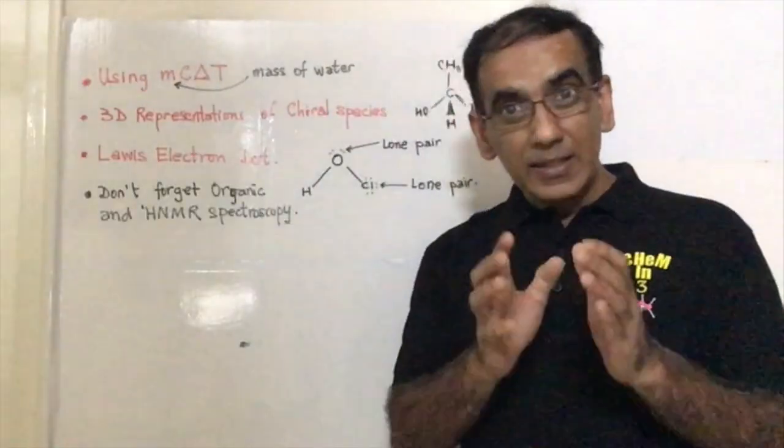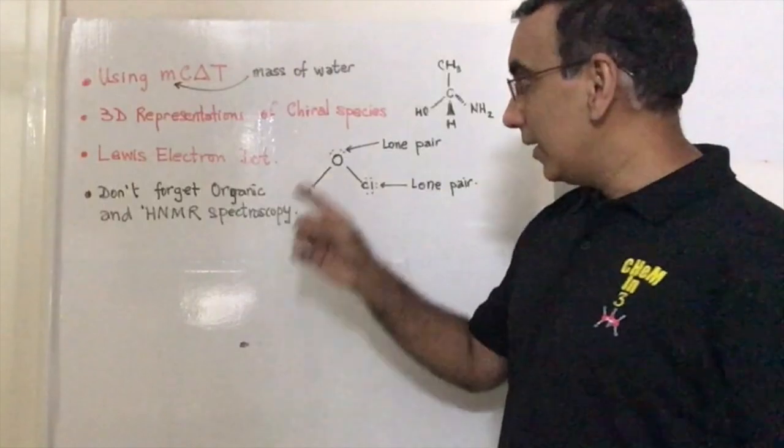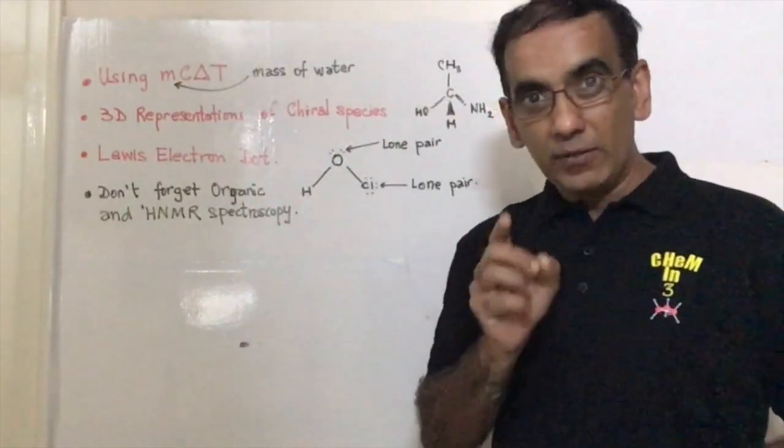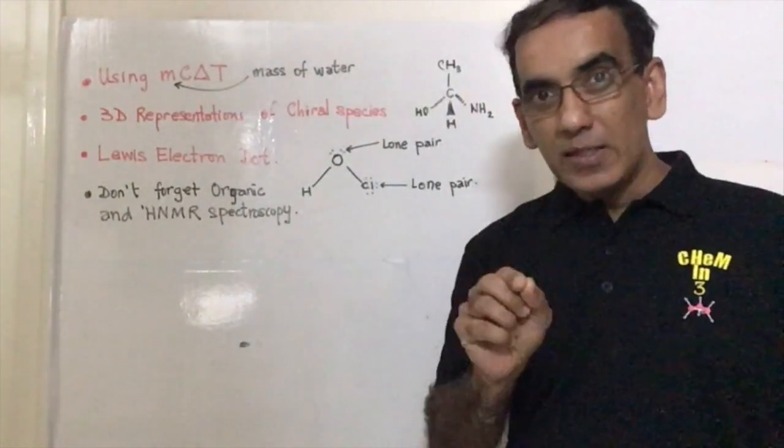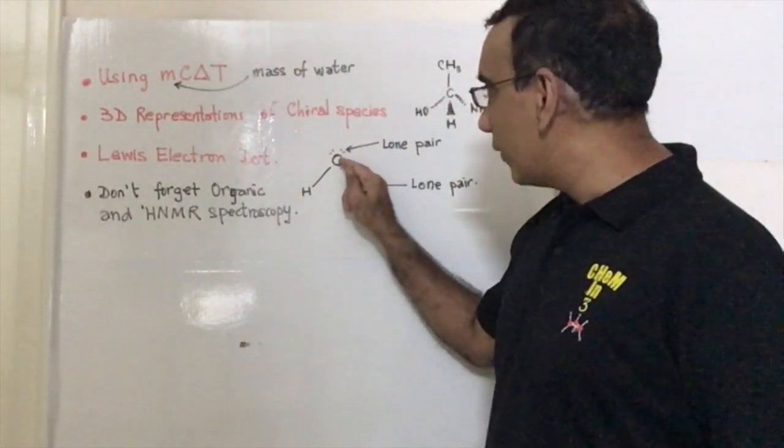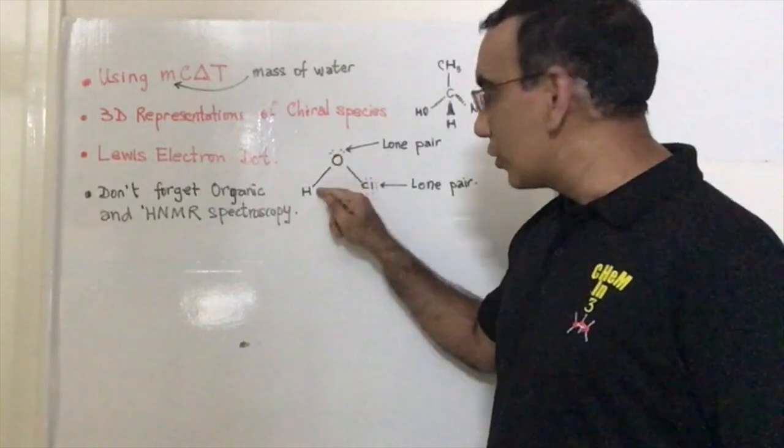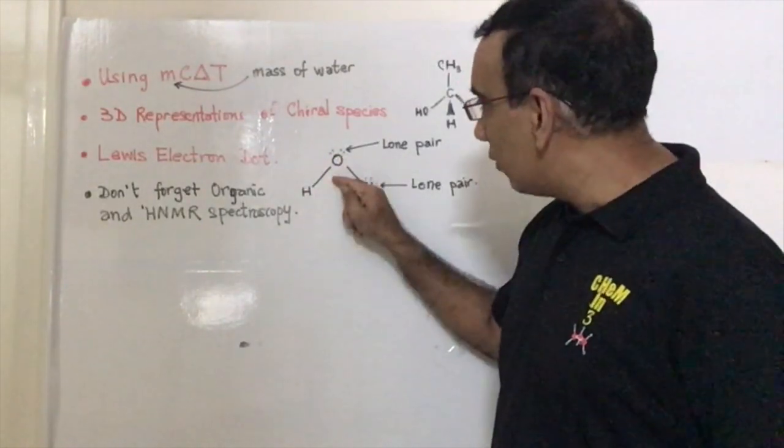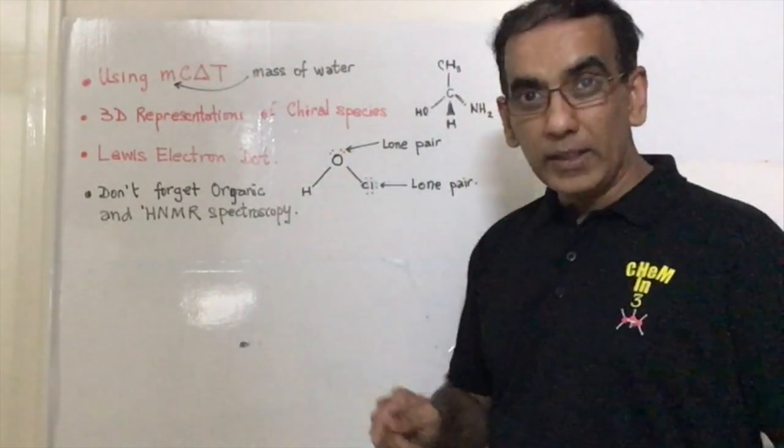Another significant and important tip that could lead to loss of marks if it's not followed is how you draw a Lewis electron dot structure. And here you can see a typical structure for an oxygen joined to a hydrogen with one covalent bond and two lone electron pairs,